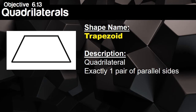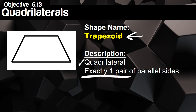Now we're going to talk about some specific types of quadrilaterals. The first one is a trapezoid. A trapezoid is a quadrilateral because it has four sides, and it has exactly one pair of parallel sides. It's very important to get the specifics down, so please don't abbreviate and rush through your notes. In this quadrilateral, the top and the bottom are the one pair of parallel sides.